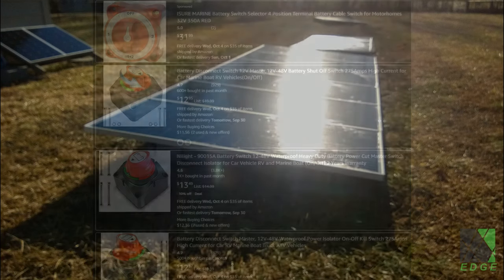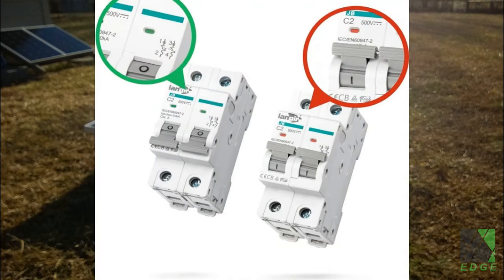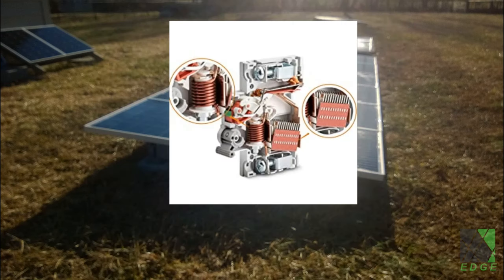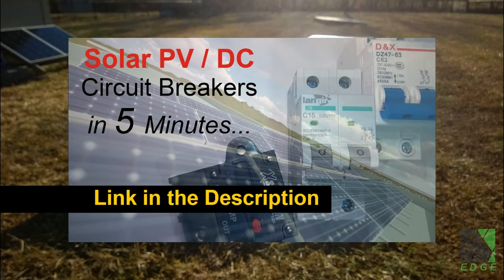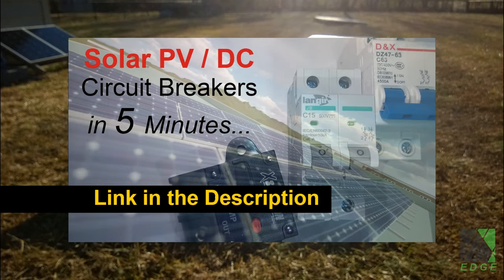But thankfully, the solution is simple. Just use a standard solar photovoltaic rated circuit breaker to turn the DC space heater on and off. I've been doing that for years, and no problem at all. These circuit breakers have special devices inside which extinguish and redirect the DC arc, allowing them to safely switch the DC current for hundreds or even thousands of cycles. Plus, they provide overcurrent protection. Check out my DC Solar Circuit Breakers in 5 Minutes video linked in the description if you want to learn more about the topic.